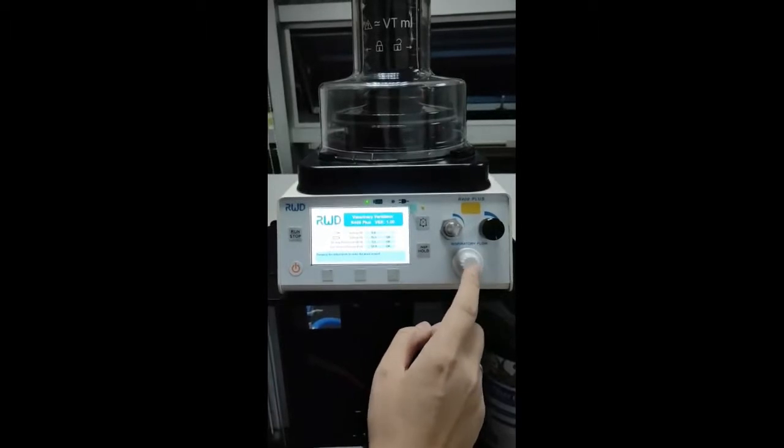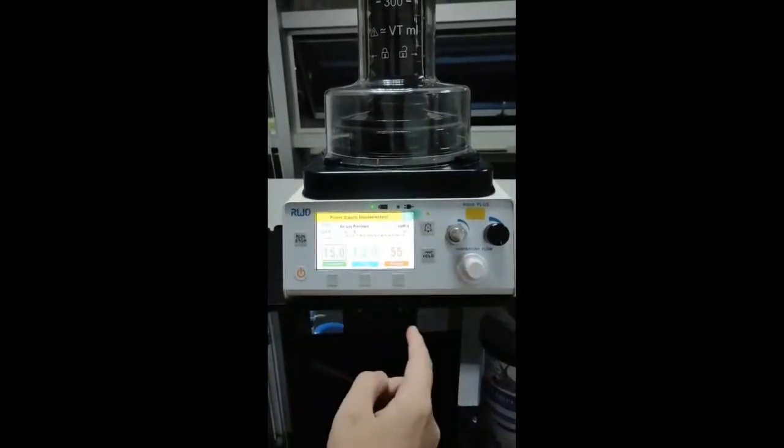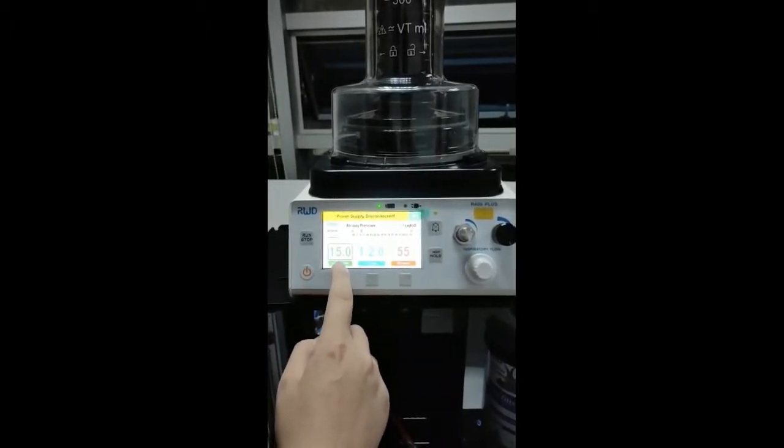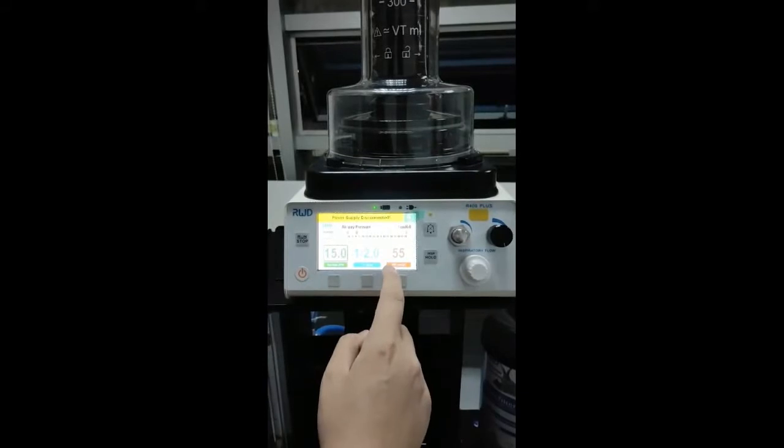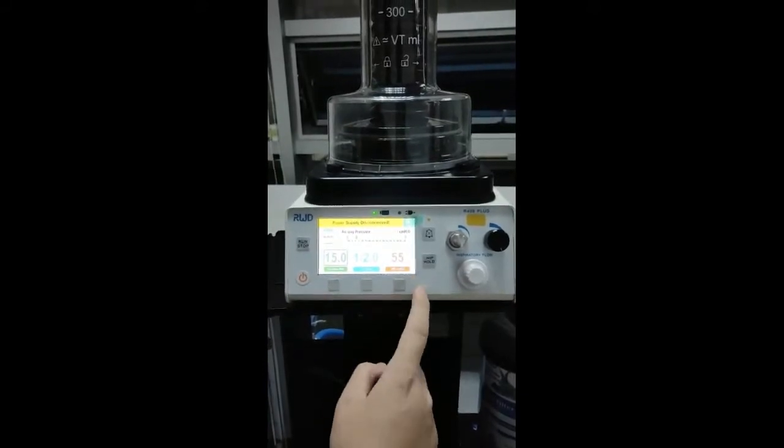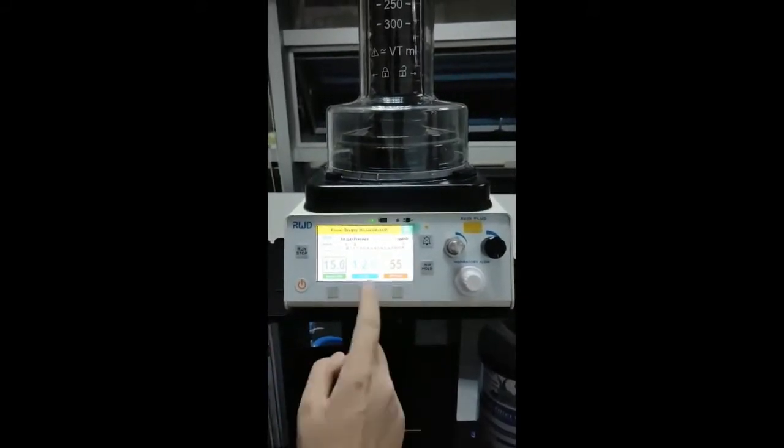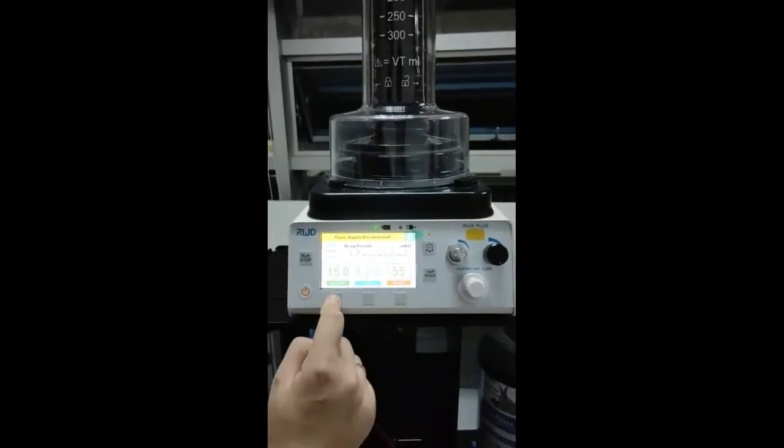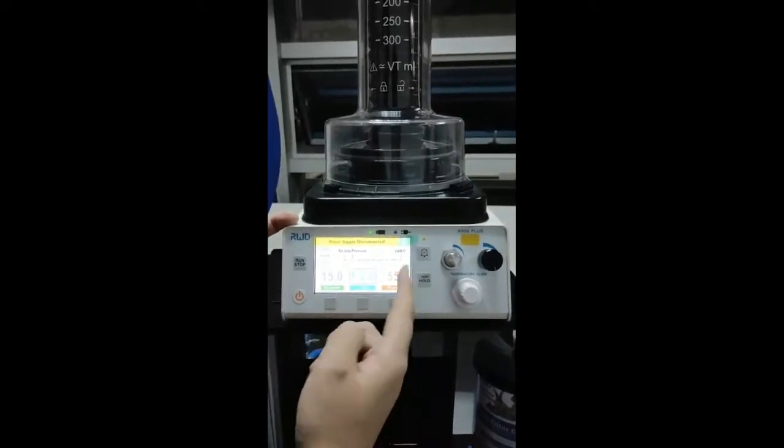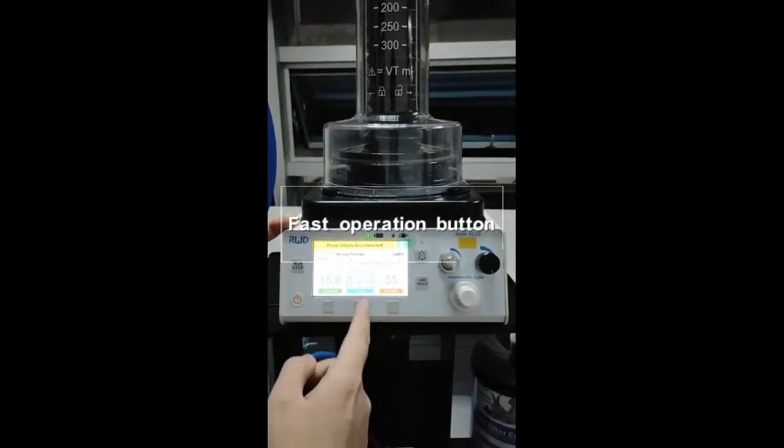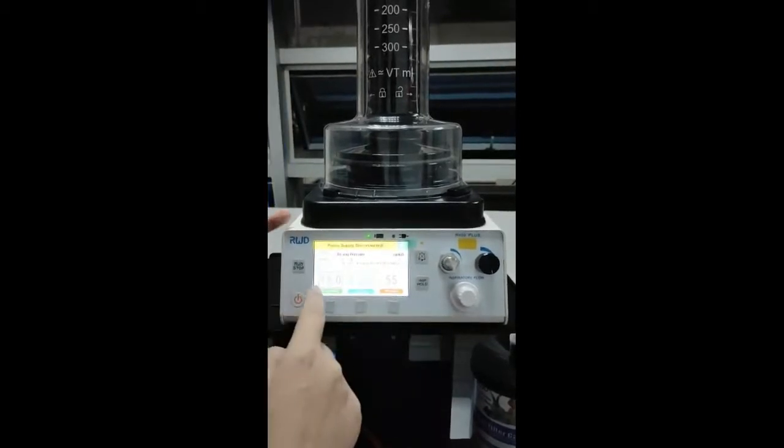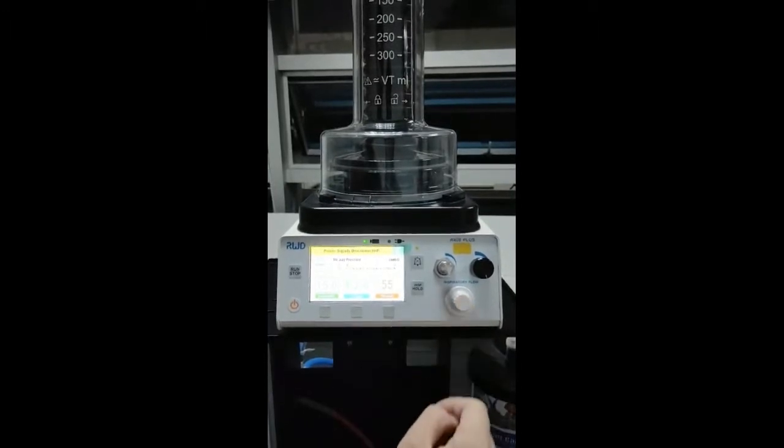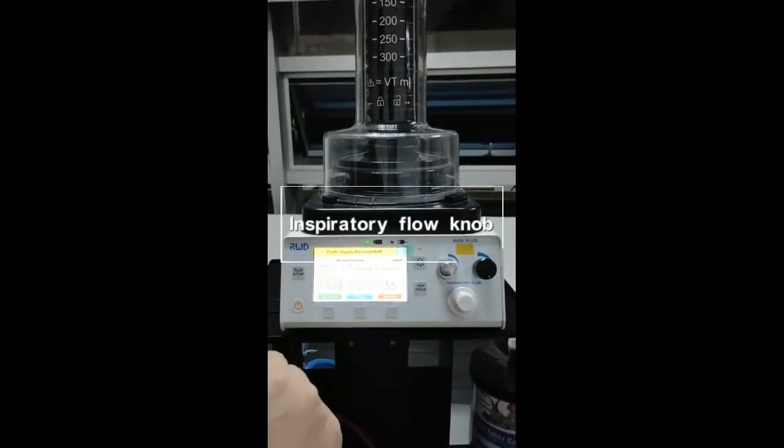Then we press the white knob to enter into the machine. We can see we have three parameters: respiration rate per minute, IE ratio, and peak inspiration pressure. For all these three parameters, they can be saved by this machine. We simply press this quick selection button to quickly find the parameter you are going to set. After finding the parameter, you just press the knob to confirm that you are going to change the value.